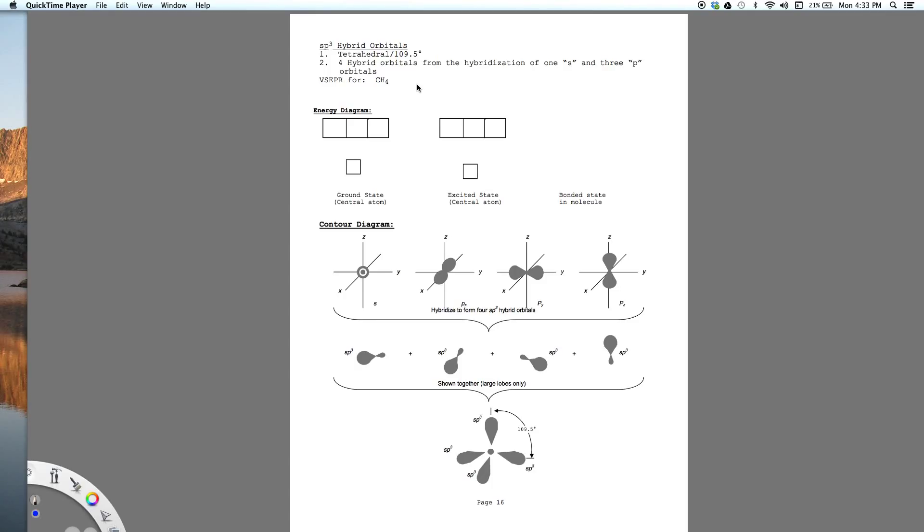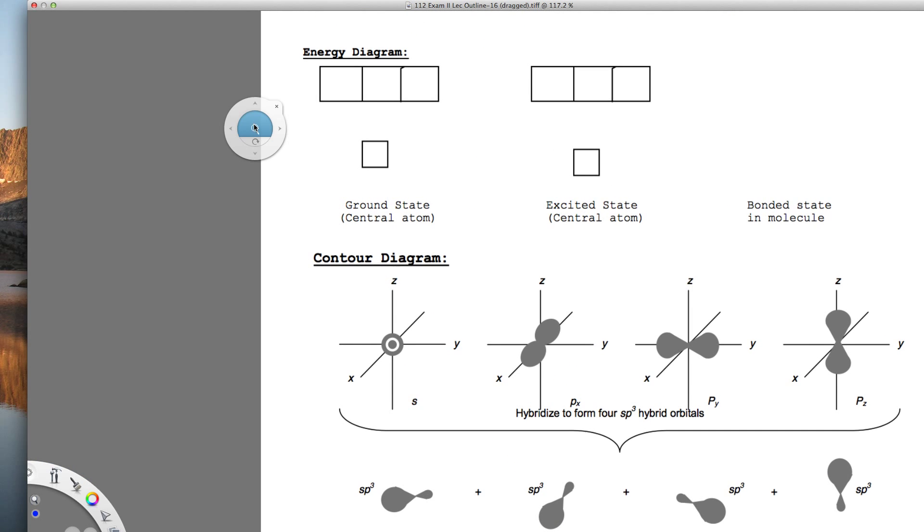I'd like to now do the box or energy diagram for a tetrahedral molecule and we're going to show the hybridization for methane, so let's bring that in here.